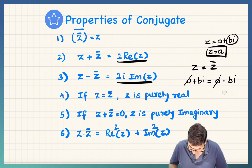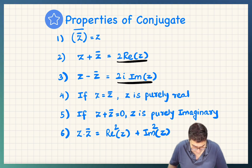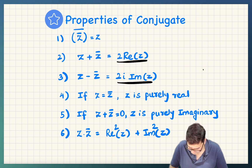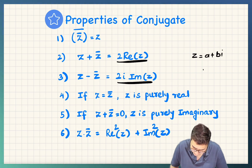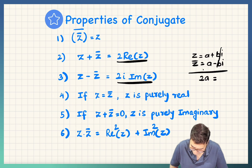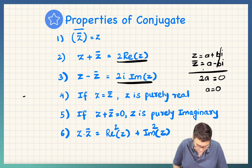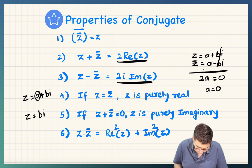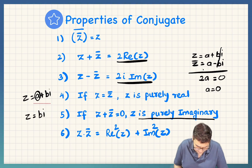Next: if z plus z-bar equals 0, then z is purely imaginary. Taking z equals a plus bi and z-bar as a minus bi, adding them gives 2a. It is given that z plus z-bar is zero, so a must be zero. But if a is zero, z was a plus bi — with a zero, z becomes bi, which is purely imaginary.